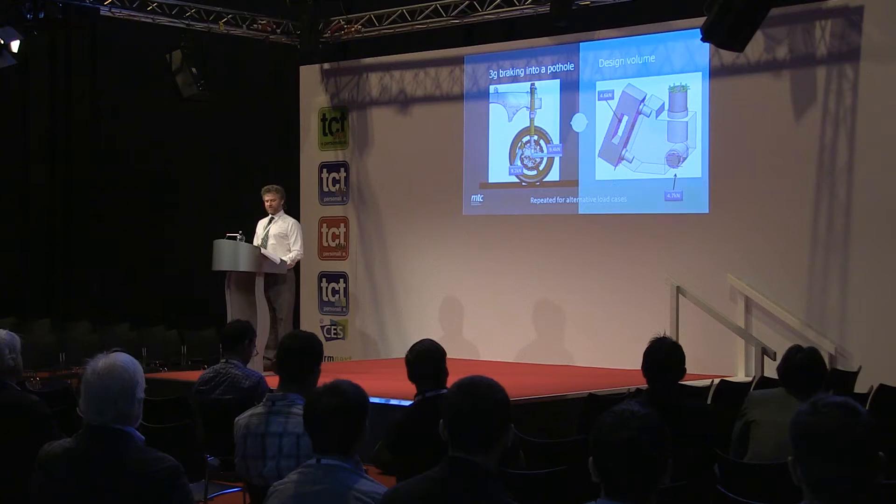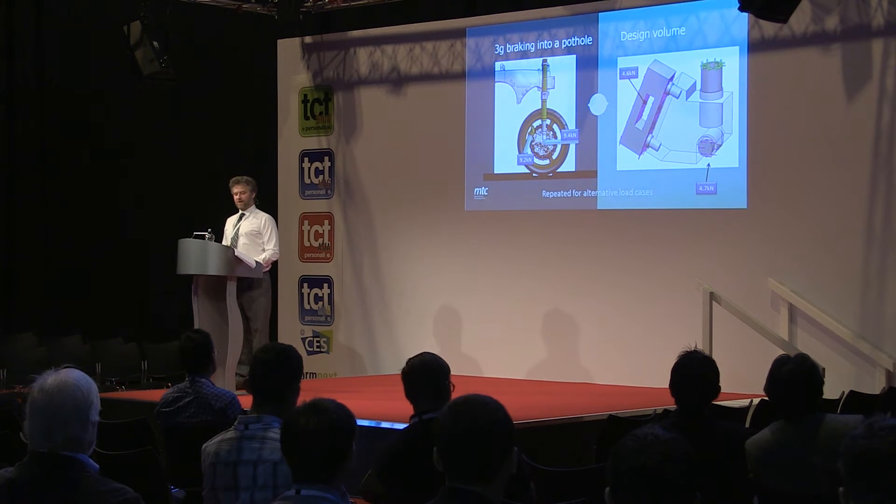First, working out what the component needs to do: several load cases are examined. K-Tech suggested a scenario of a bike doing an endo — braking and slamming into a pothole — equivalent to a 3G acceleration force on the wheel. Resolving that into forces on the fork bottom gives 9.4 kN from the axle and 9.2 kN from the caliper as a rotational force. These forces and the allowable design volume are given to the algorithm. Alternative load cases like a poorly executed wheelie were also considered, but this scenario was deemed the worst case.